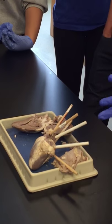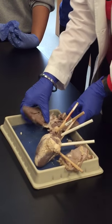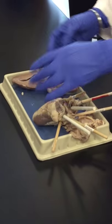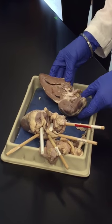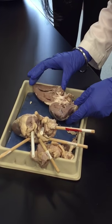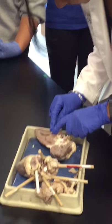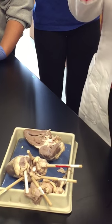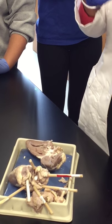Now this is a heart cut open. These muscles we see over here are the chordae tendineae. The chordae tendineae are the muscular tissue that pulls to open or close the valves.